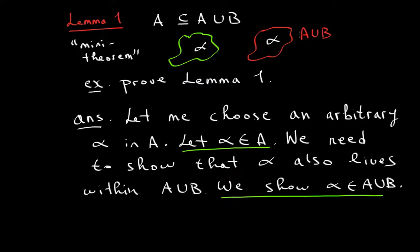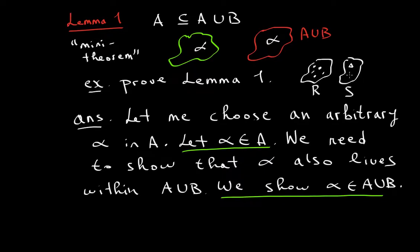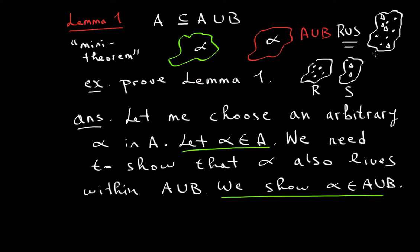A few videos ago, we talked about what unions are. The union symbol means you connect them. If you have set R filled with circles and set S filled with triangles, then R union S is a huge set containing all circles from R and all triangles from S.